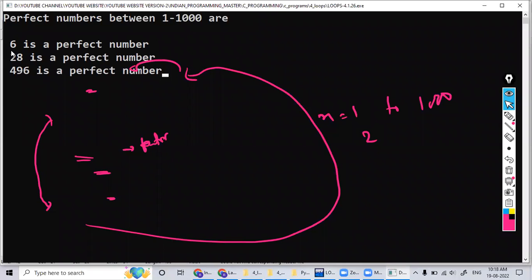We have three numbers. One is 6, next one is 28, and next one is 496.